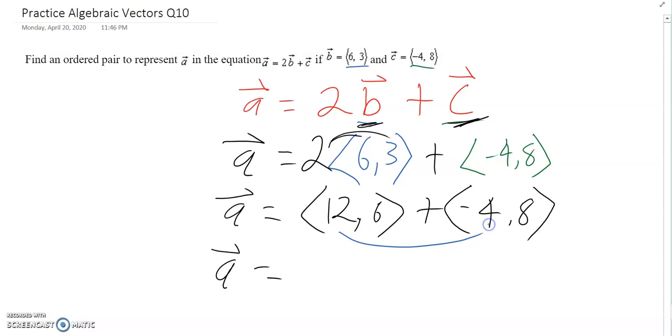Looks like for the X's, 12 plus negative 4 gives me 8. And for the Y's, 6 plus 8 gives me 14. And so that should be our resultant ordered pair when we take 2b plus c.